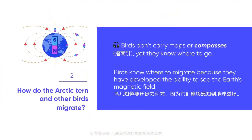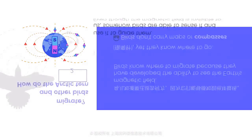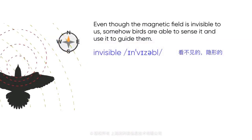The way the Arctic tern and other birds migrate is fascinating. Birds don't carry maps or compasses, yet they know where to go. Birds know where to migrate because they have developed the ability to see the Earth's magnetic field. The Earth is like a huge bar magnet, with a north pole as the positive end and a south pole as the negative end. Even though the magnetic field is invisible to us, birds are able to sense it and use it to guide them. Some scientists even claim that birds can physically see the field — it's like they have a magnetic compass in their brain.